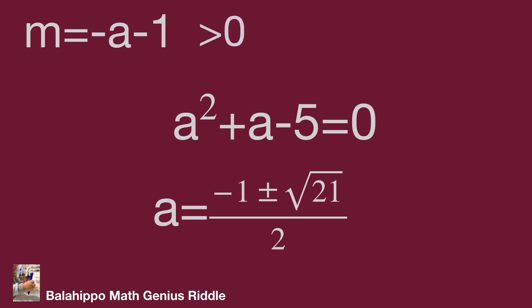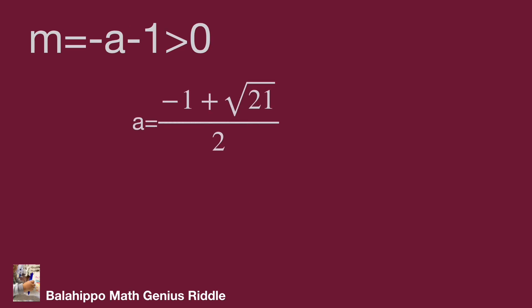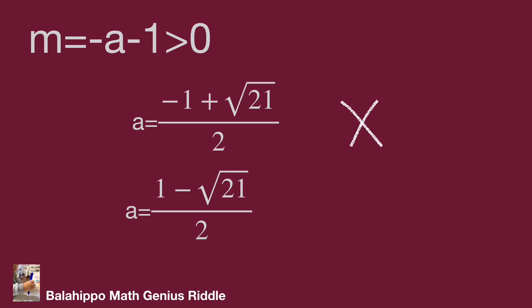Checking both values: when a equals negative 1 plus the square root of 21 over 2, substituting into negative a minus 1 gives a negative m, so this value is not valid. When a equals negative 1 minus the square root of 21 over 2, we can verify m is greater than 0, so this is a correct answer. Do you find it? Hope you enjoy the video. Thank you.